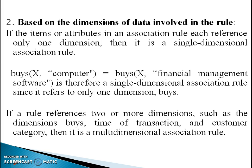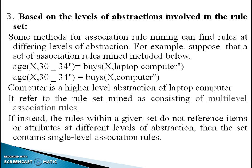Based on the dimension of data involved in the rule: if the items or attributes in an association rule each reference only one dimension, then it is a single-dimension association rule. If a rule references two or more dimensions — such as time of transaction and customer category — then it is a multi-dimensional association rule. For example: buys(X, computer) ⇒ buys(X, financial management software) is a single-dimensional association rule, since it refers to only one dimension.